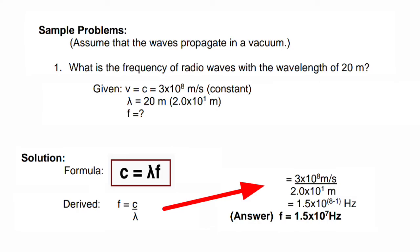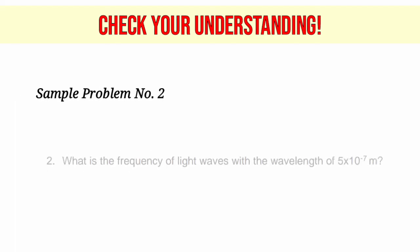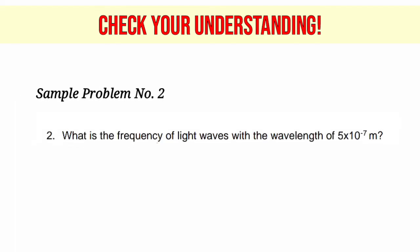Let's continue solving the problem. We simply have to substitute the given in the derived equation. So we have 3×10⁸ meters per second, the speed of light which is constant, divided by 2×10¹ meters. So this is the 20 meters wavelength in scientific notation. So the answer would be 1.5×10⁷ hertz. Now let's check your understanding. Try to answer sample problem number 2 and check your answer at the end of this video.